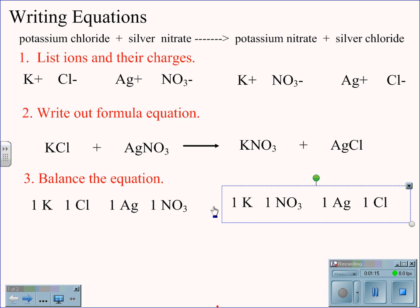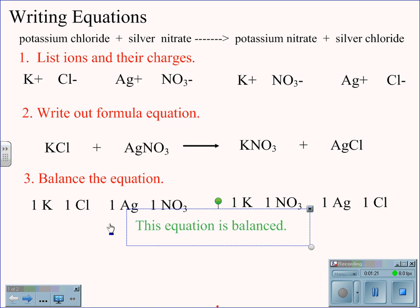On the product side, counting the atoms, we find one potassium, one nitrate, one silver, and one chlorine. We see that this equation is already balanced.